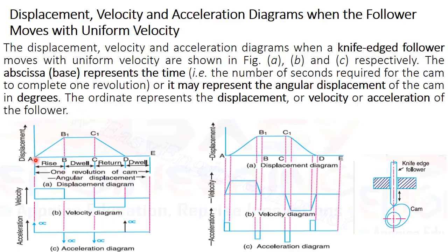The x-axis represents time or angular position of the cam, and the ordinate represents displacement, velocity, and acceleration. When the cam rotates anti-clockwise, the follower will rise or move in the upward direction. We can say the follower moves from point A to point B1.